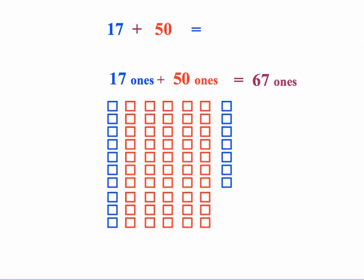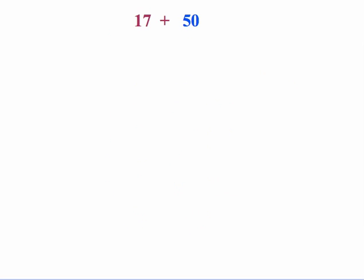We have 67 pennies, which is a lot of work, to tell you the truth. So now let's do this with place value. So the 17 is 1 ten and 7 ones. And the 50 is simply 5 tens.